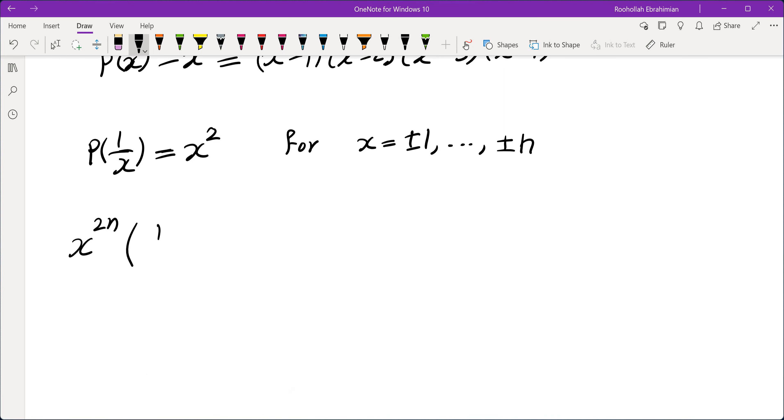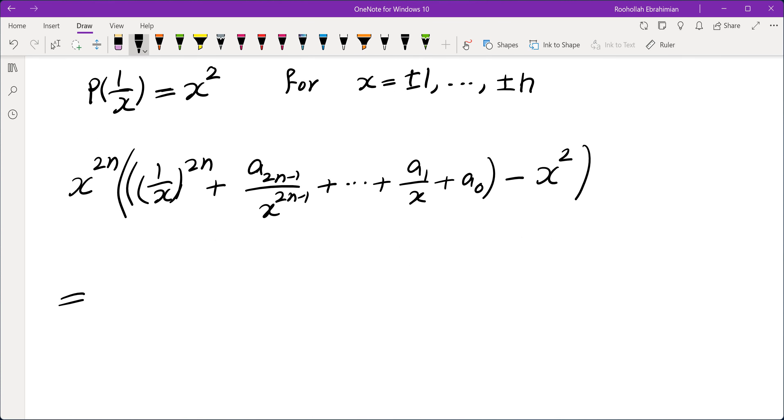We are going to get 1 over x to the power of 2n, plus a_{2n-1} over x to the power of 2n minus 1, all the way to a_1 over x, plus a_0. And then I'm going to subtract x squared. This is the polynomial that, when we multiply by x to the power of 2n, is in fact 0 for those values of x. So let's clear the denominators.